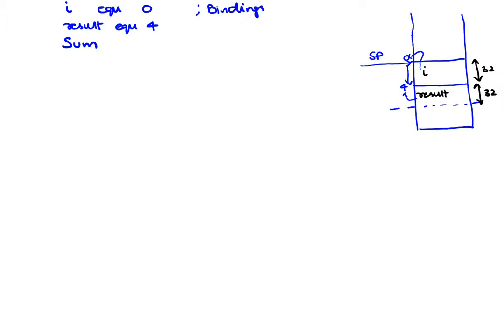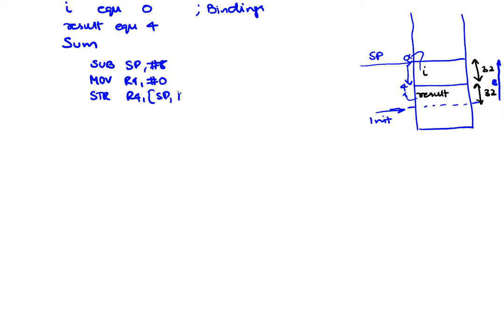Now we're ready to write our code. The first step is allocation: when this subroutine is entered, the stack pointer is pointing somewhere; we decrement it to make room. So we do SUB SP, #8 — because there are 8 bytes to allocate. Then we initialize result to 0: MOV R4, #0, then STR R4, [SP, #result]. This allocation step is followed by our first access.